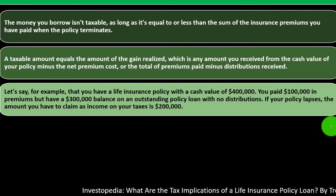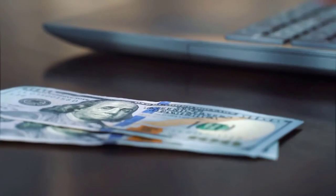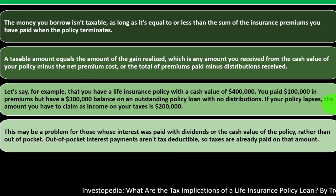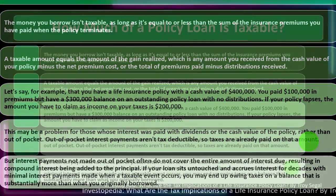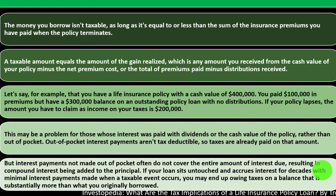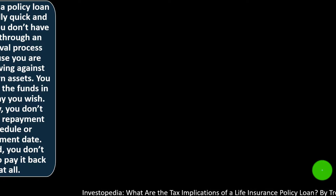For example, say you have a life insurance policy with a cash value of $400,000. You paid $100,000 in premiums but have a $300,000 balance on an outstanding policy loan with no distributions. If your policy lapses, the amount you have to claim as income is $200,000 — the amount over the premiums you paid, essentially the principal of the investment. This may be a problem for those whose interest was paid with dividends or the cash value rather than out of pocket. Out-of-pocket interest payments aren't tax deductible. Interest payments not made out of pocket often don't cover the entire amount due, resulting in compound interest being added to the principal.